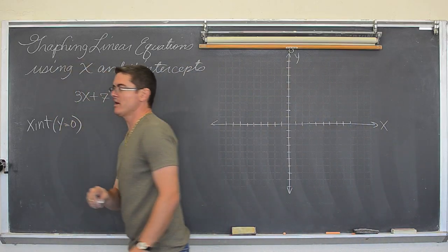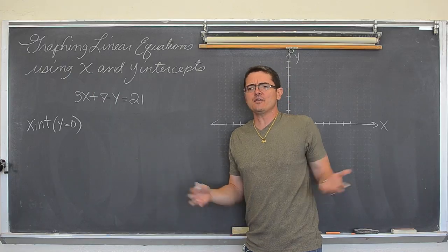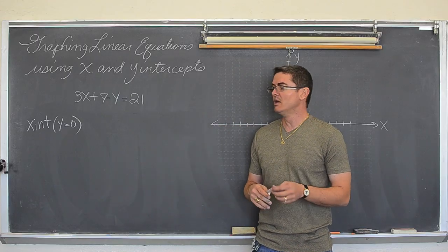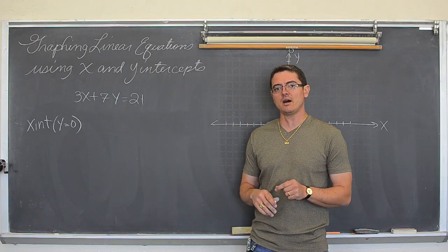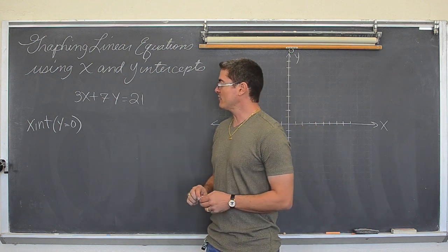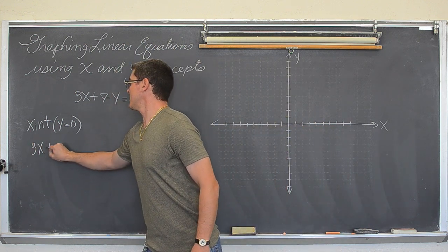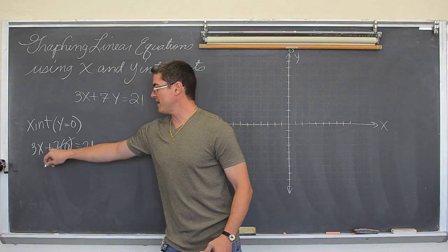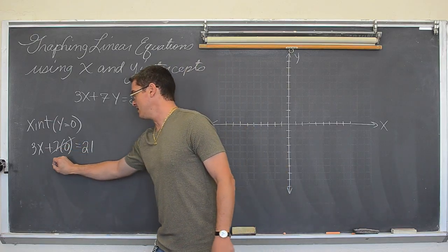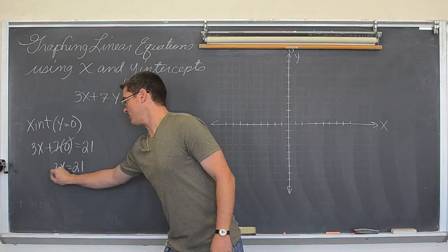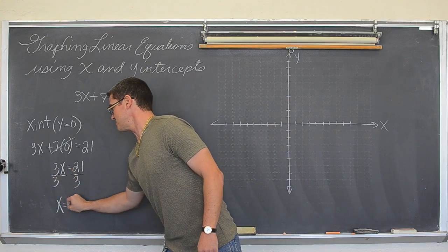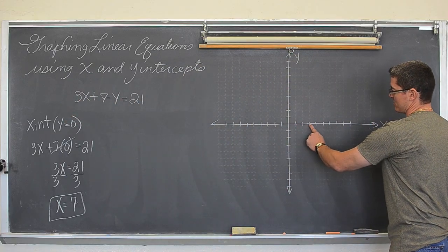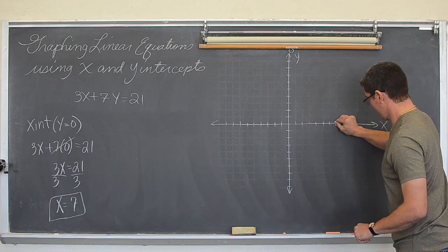So, if you want an x intercept, just take your equation. Even if it is in slope intercept form, it doesn't even matter what kind of equation it is. You might be graphing something to the fourth degree. If you plug in y equals 0, you will find an x intercept. These are just linear functions though. So, we have 3x plus 7 times 0 equals 21. 7 times 0 is 0. When you add by 0, nothing changes. So, now I don't need to write that. 3x equals 21. When I divide by 3, I get x is equal to 7. So, this line has an x intercept at 7. So, 1, 2, 3, 4, 5, 6, 7.